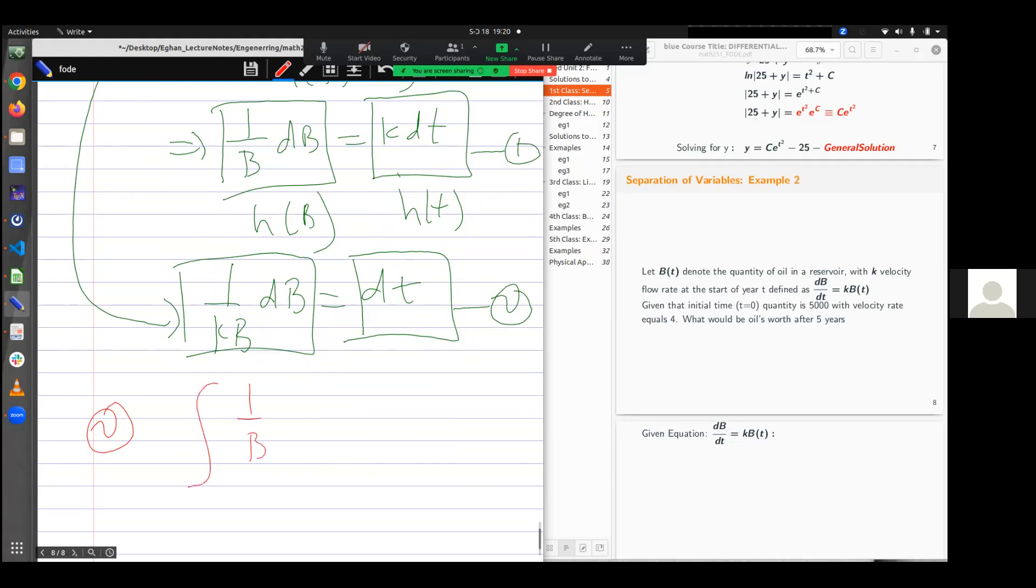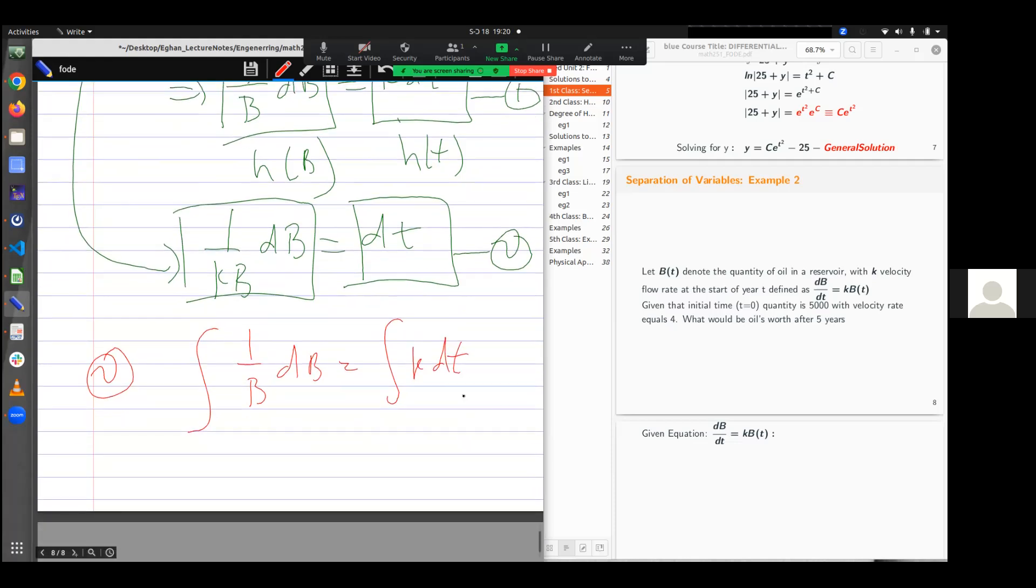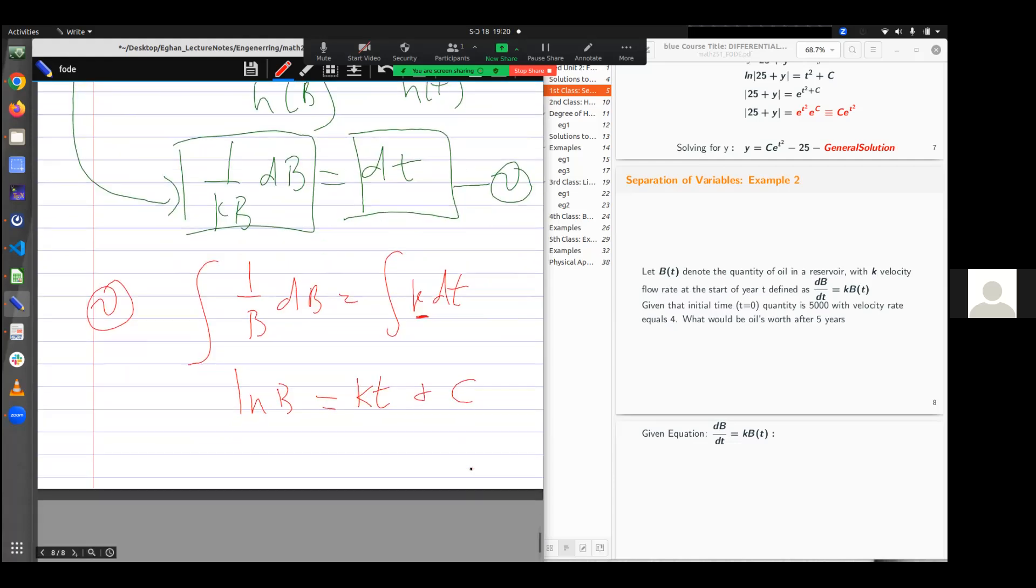So I have integral 1/b db is equal to integral k dt. So this gives me ln b is equal to k is a constant. If you integrate a constant with respect to any variable, just that constant times the variable. And then the constant of integration comes here.